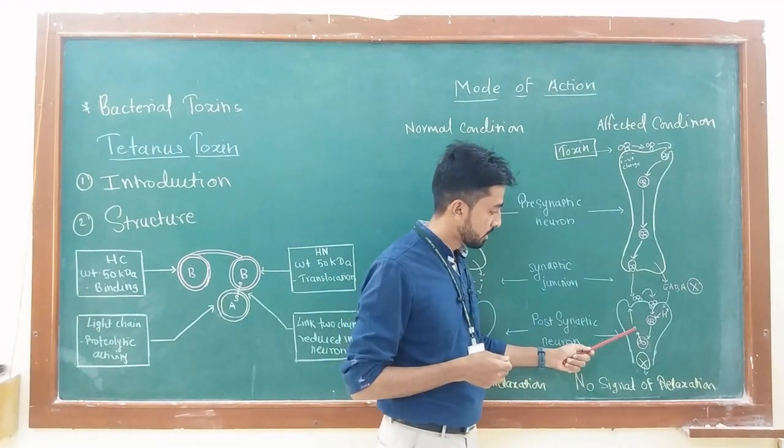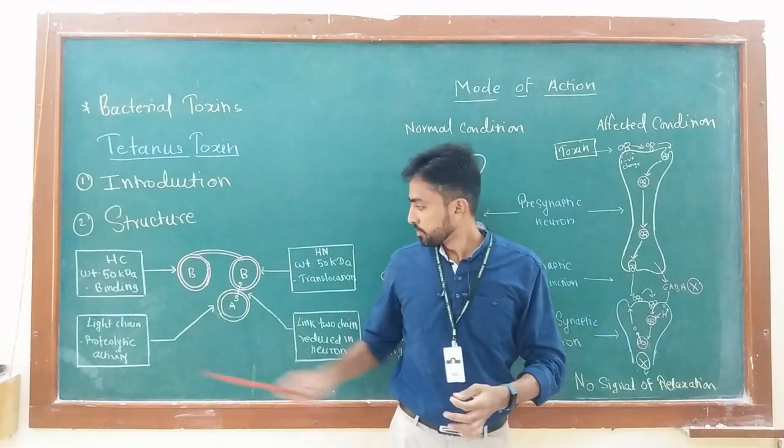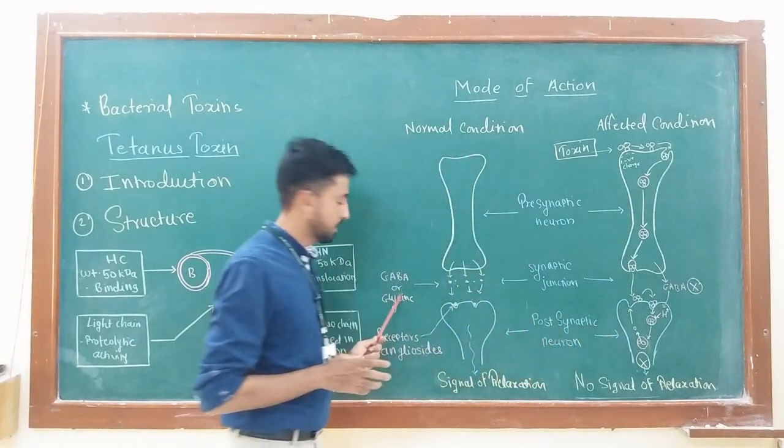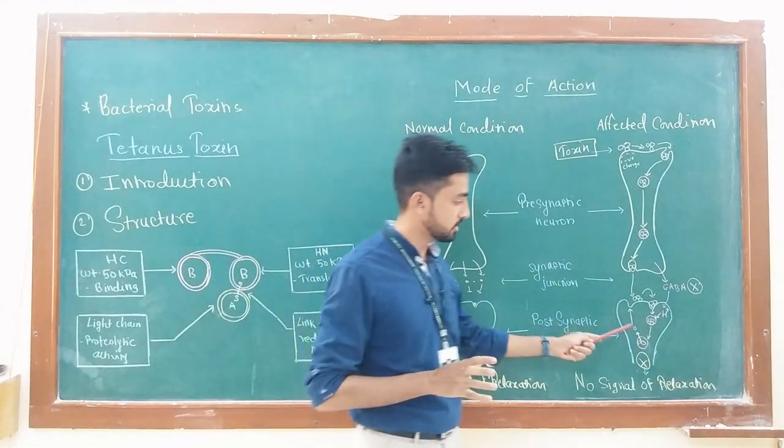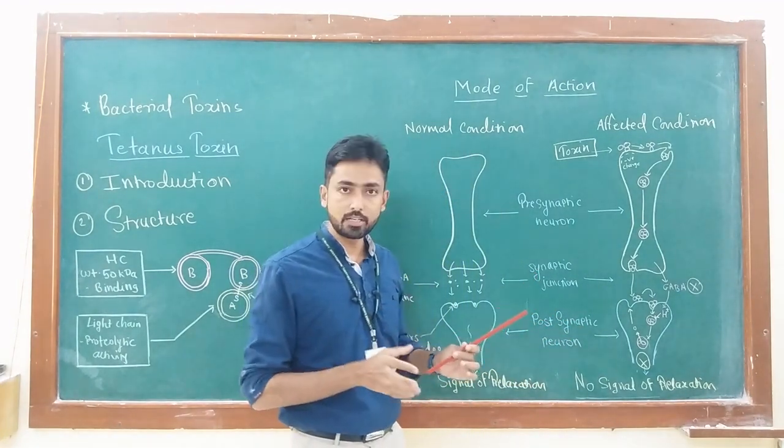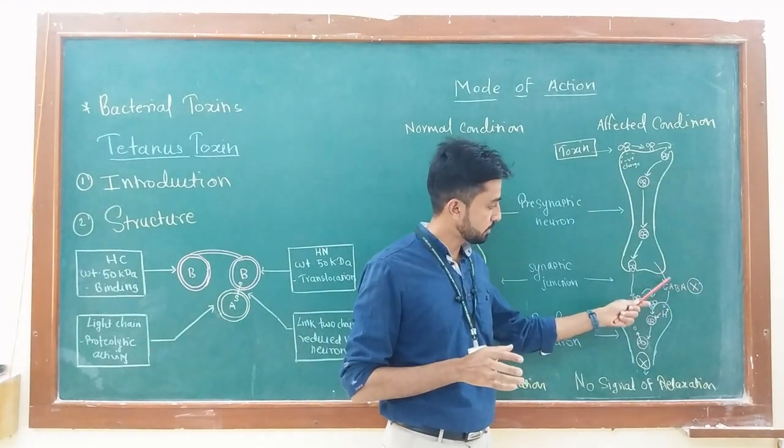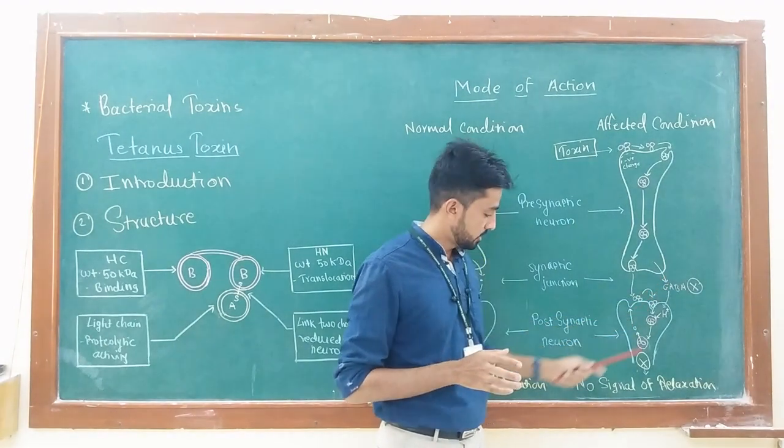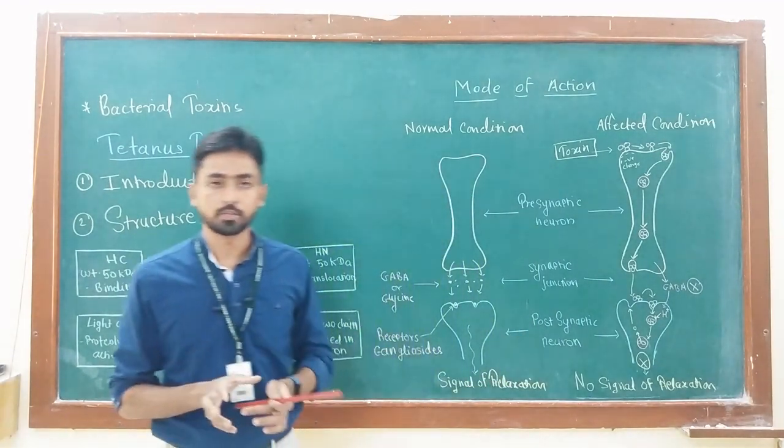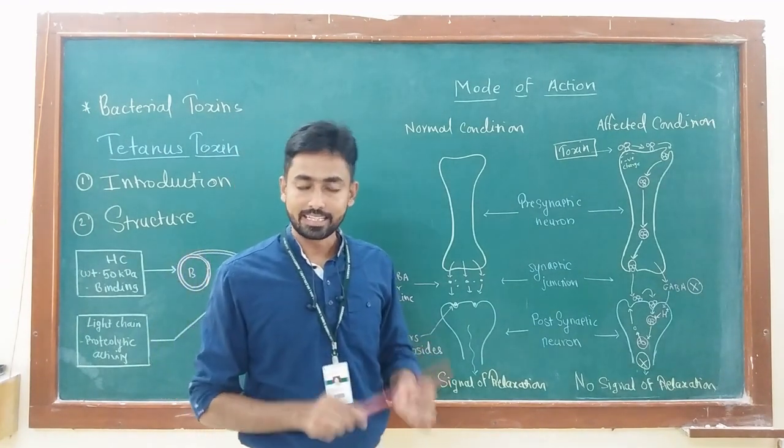When this A subunit is present in the cytoplasm of the postsynaptic neuron, it exerts its proteolytic activity and attacks the receptors of GABA or glycine. Once this A subunit of the toxin blocks the receptors of GABA and glycine, these inhibitory neurotransmitters can no longer bind to the postsynaptic neuron. And due to the absence of these inhibitory neurotransmitters, there will be no signal of relaxation, and the muscles in the affected person remain in contracted form, which leads to a disease called tetanus.